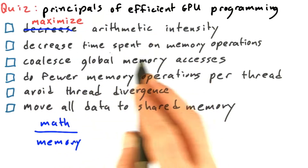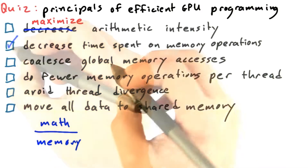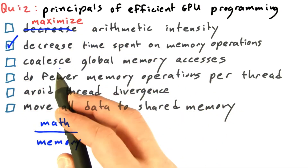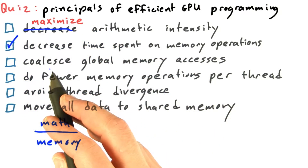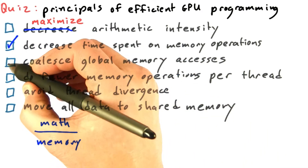Spending less time on memory operations clearly helps. And the single most important way that you can do that is to coalesce your global memory accesses.